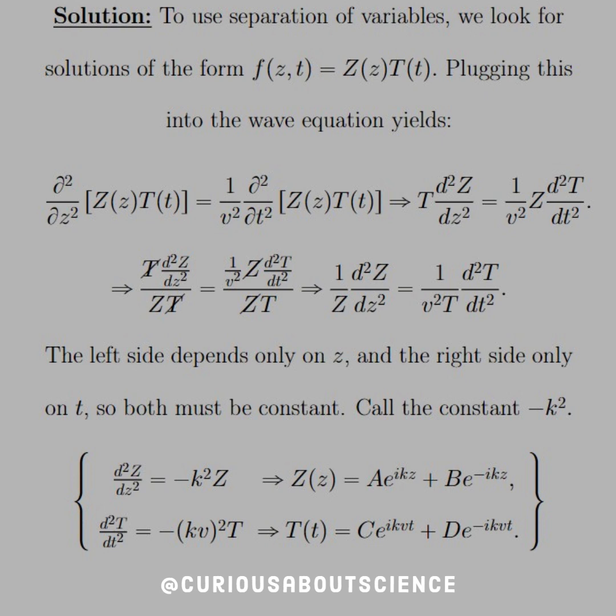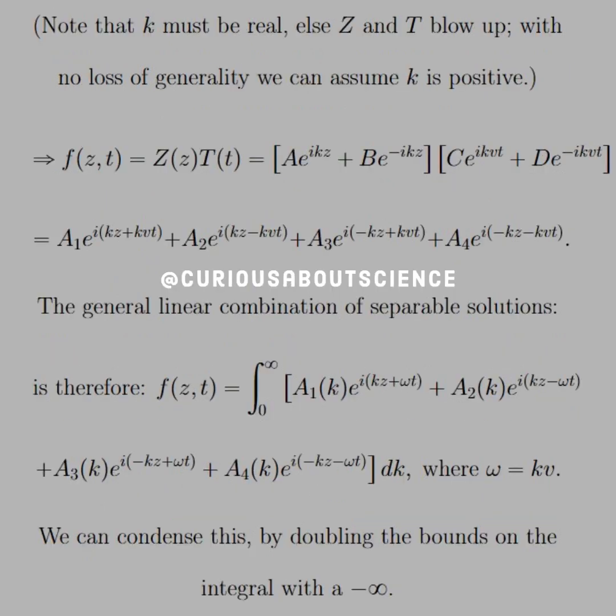Now we've got to do a little more work on these definitions. The tilde notation tells us we want the real part. Let's take a note here that k must be real or else Z and T blow up. With no loss of generality, we can assume k is positive. As a physical system, we have to get rid of extraneous solutions, and that's what the real part is doing here.